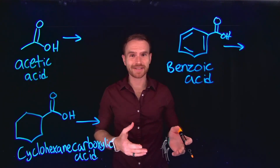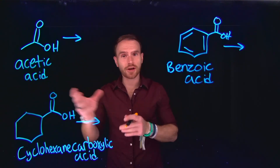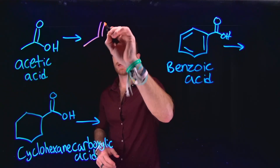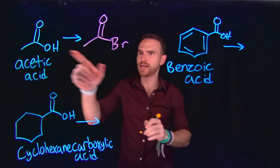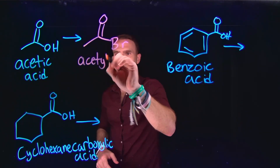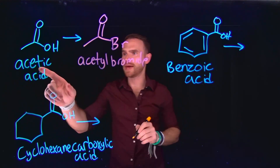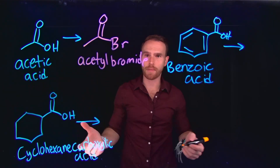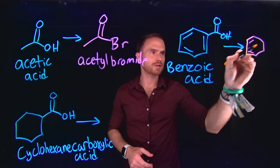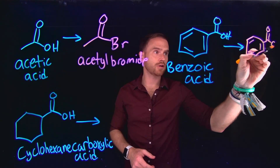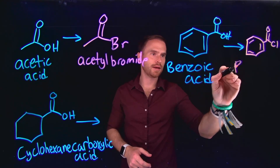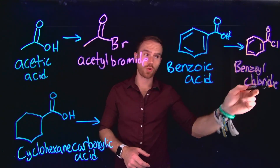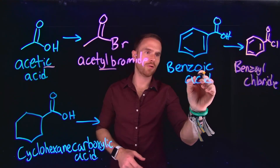Let's begin our nomenclature discussion with acid halides. Just like with carboxylic acids, we prioritize the carboxyl functional group and name the other substituents accordingly. So in the case of acetic acid, this can become an acid halide. If we replace the OH group with a Br, this would become acetyl bromide. We change the ending from -ic acid to -yl followed by the halide name. So acetic acid becomes acetyl bromide. Benzoic acid, if it becomes an acid halide — in this case an acid chloride — becomes benzoyl chloride, changing the -ic ending to -yl.